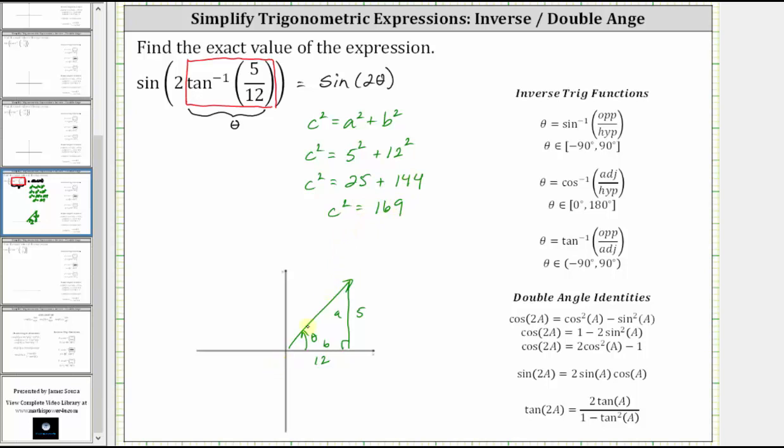The hypotenuse is always positive, so now we'll take the principal square root of both sides of the equation. And since thirteen times thirteen is equal to one hundred sixty-nine, C is equal to thirteen.